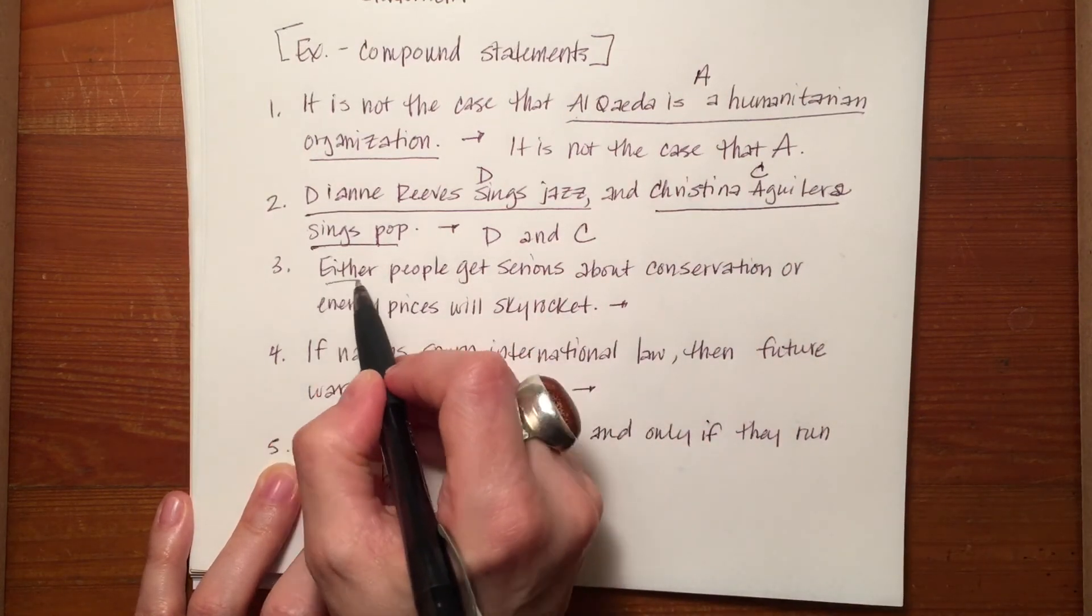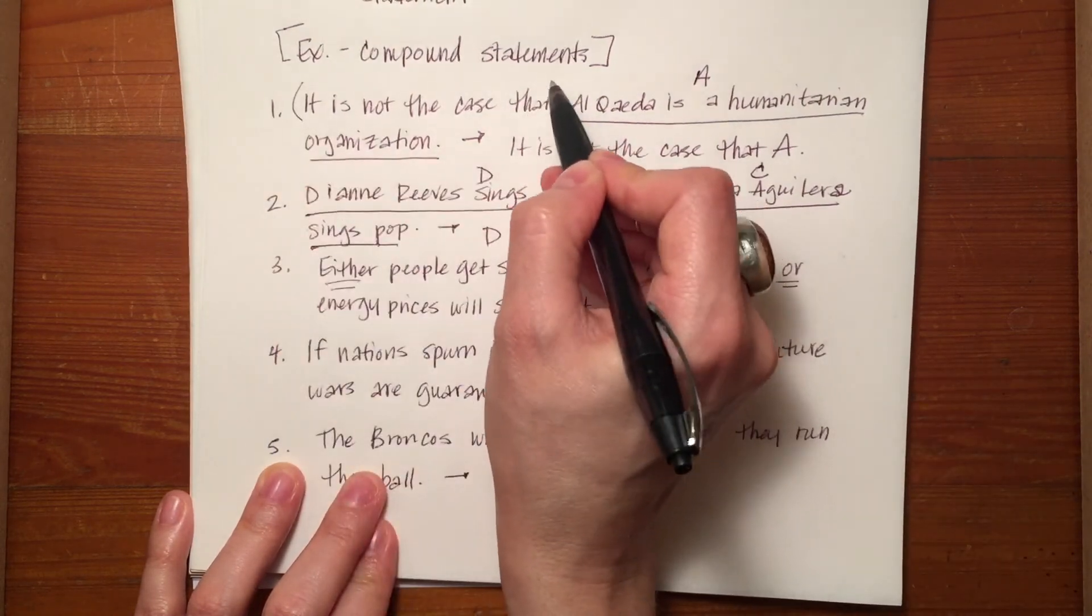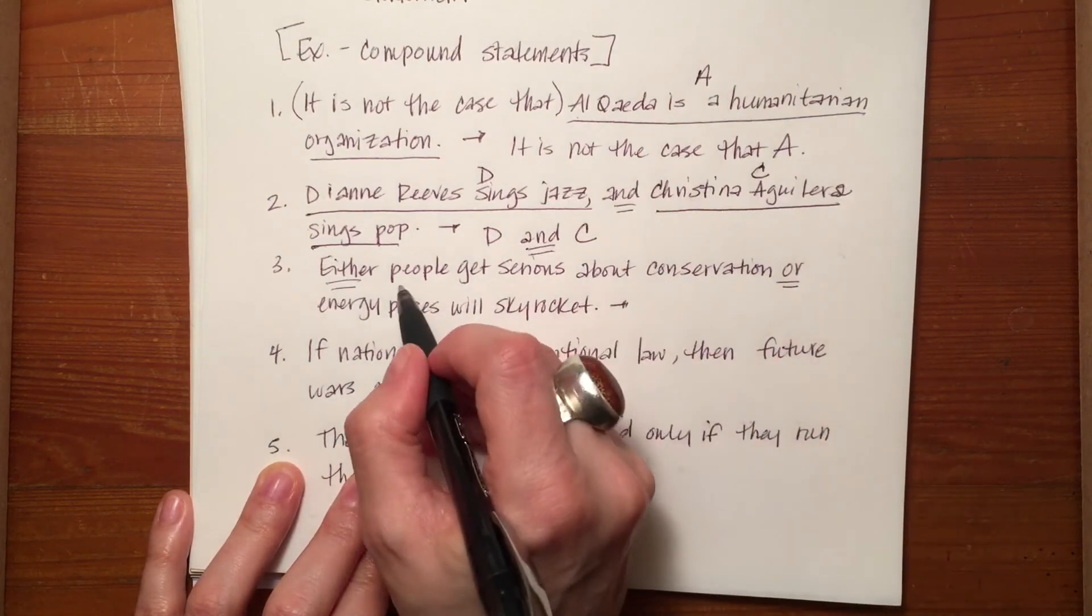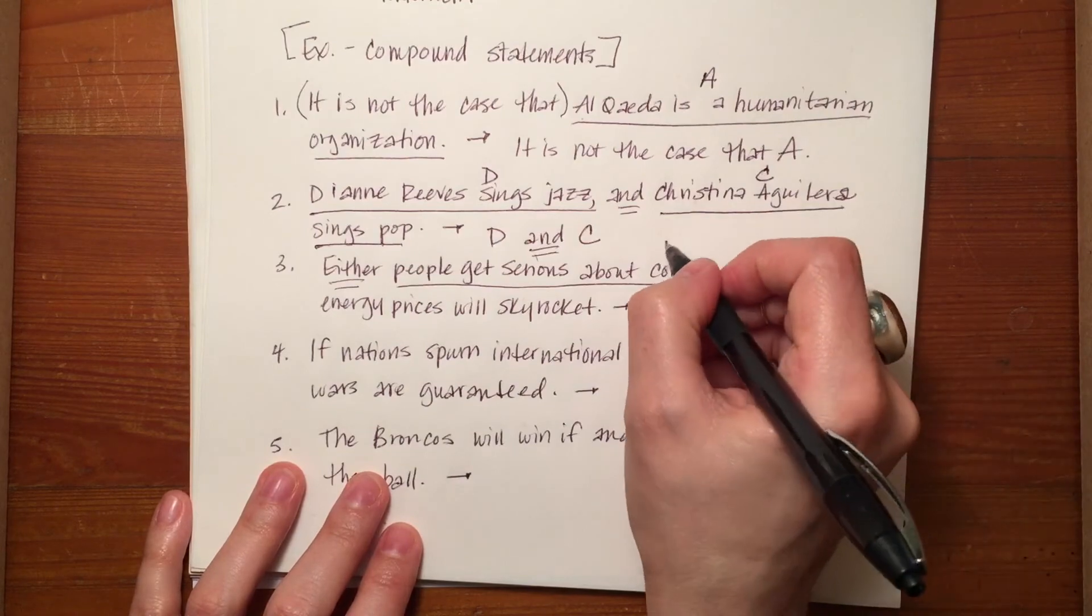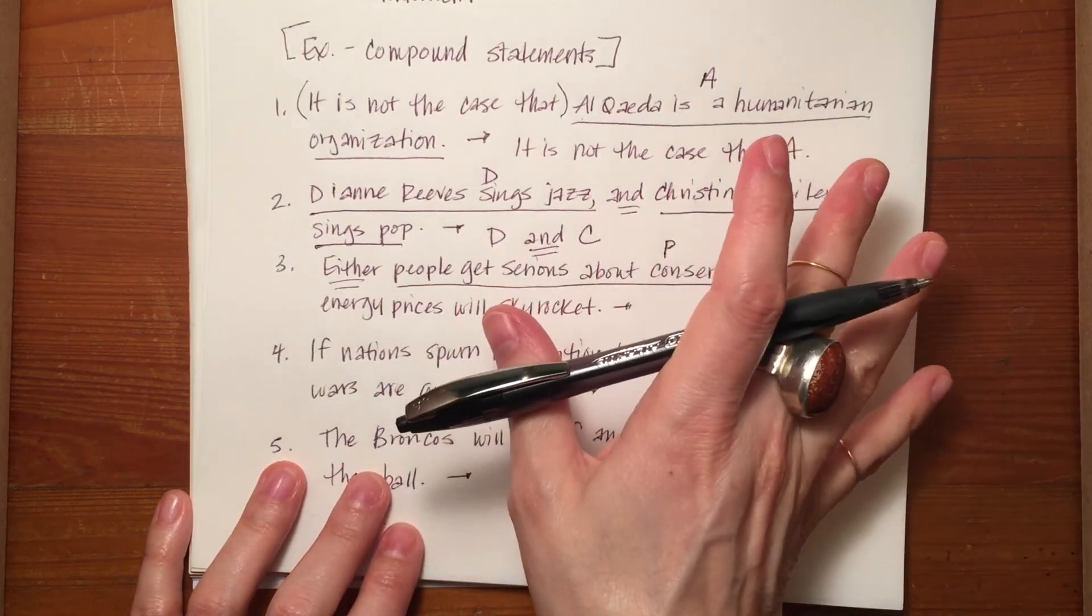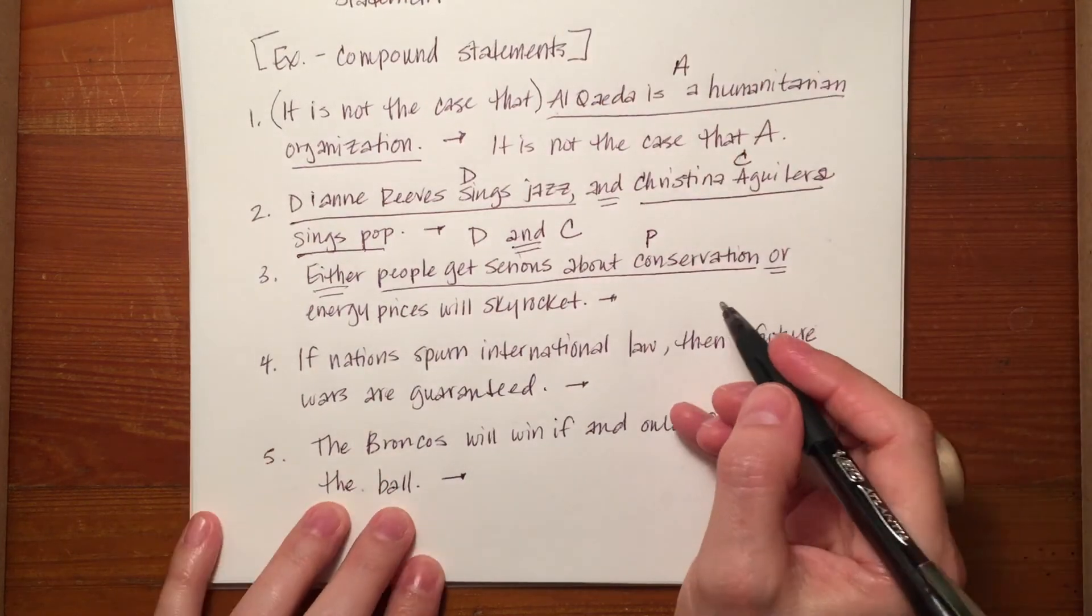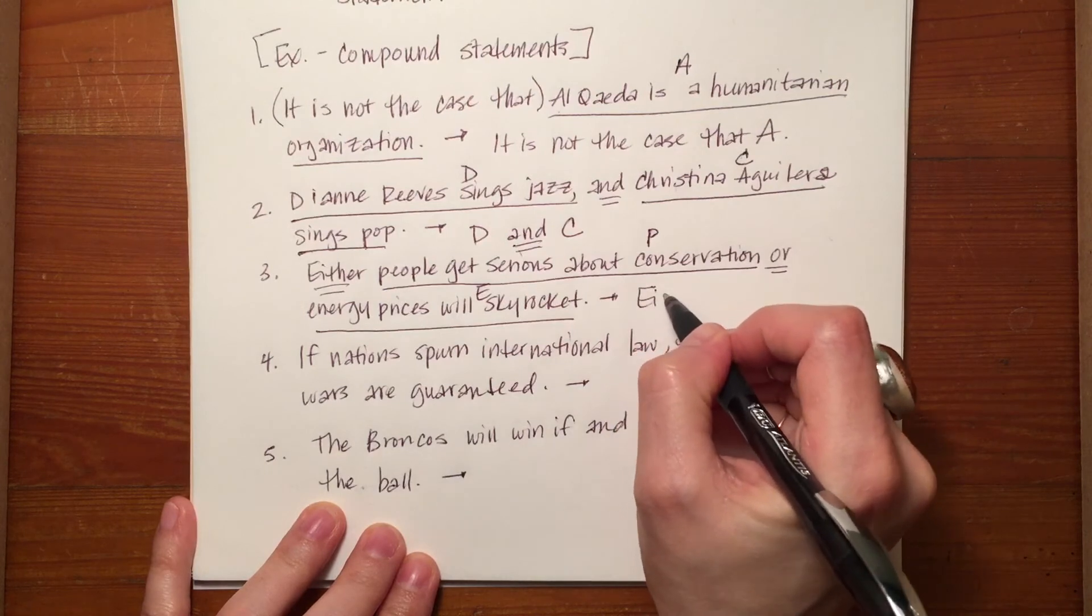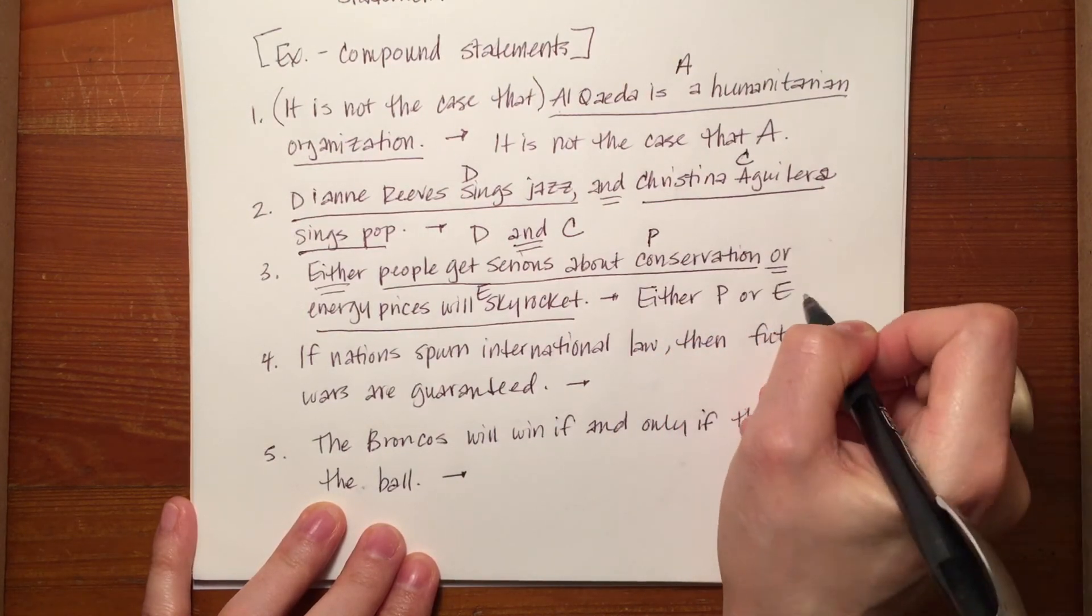Here we have an either or instead of an it is not the case that or an and. So we have an either or, so either people get serious about conservation, we'll use a P here. The P, S, and M's don't matter anymore as letters as variables, so use whatever you like. Or energy prices will skyrocket, let's use E. So we might change this to either P or E.